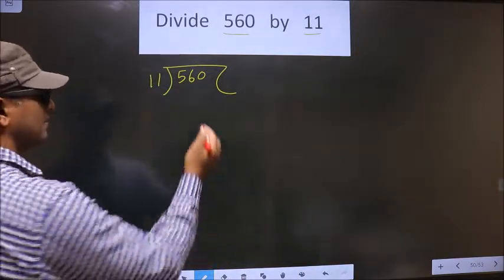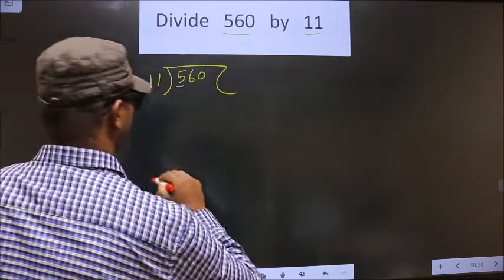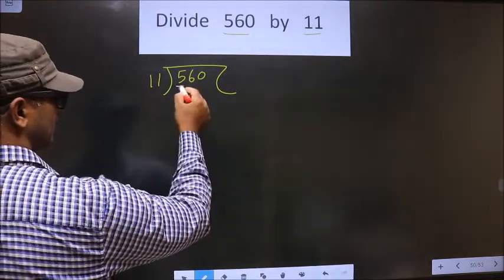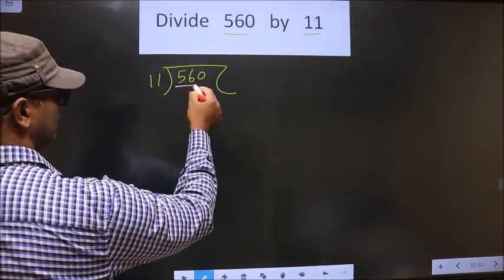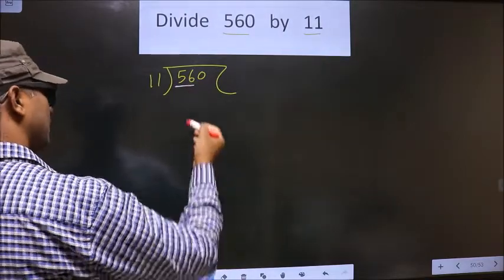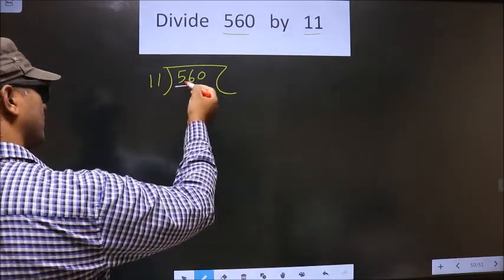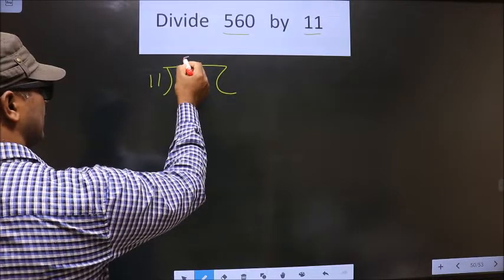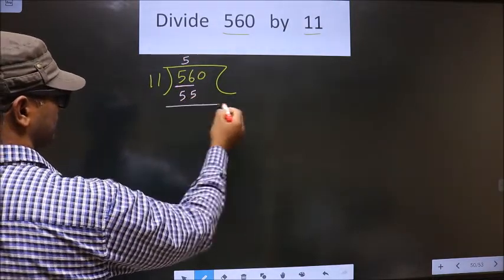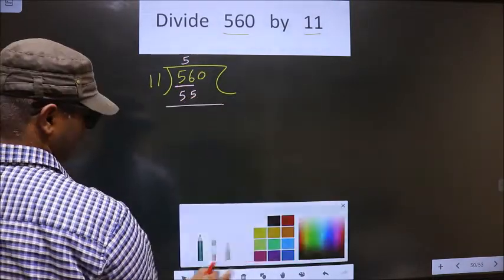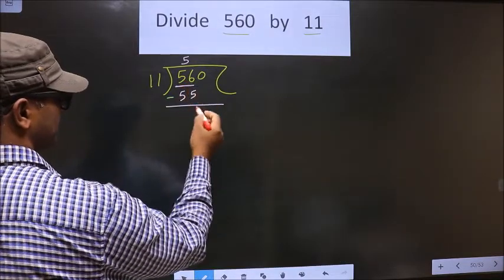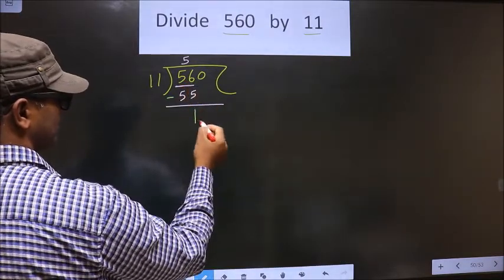Now here we have the number 5. 5 is smaller than 11, so we should take two numbers, that is 56. A number close to 56 in the 11 table is 11 fives, which is 55. Now you subtract: 56 minus 55 is 1.